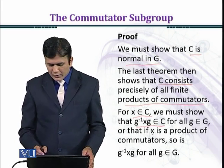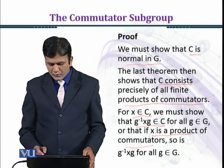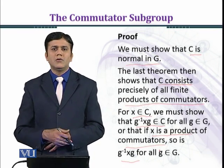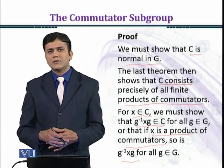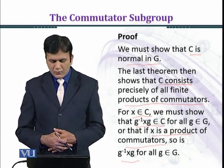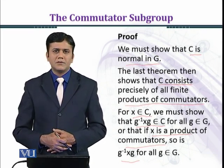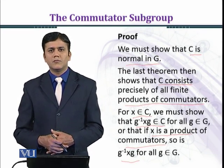Or that if x is a product of commutators, so is g^-1 x g for all g belonging to G. We must show that if x has a commutator product, then g^-1 x g is a product of commutators, and then we are done.